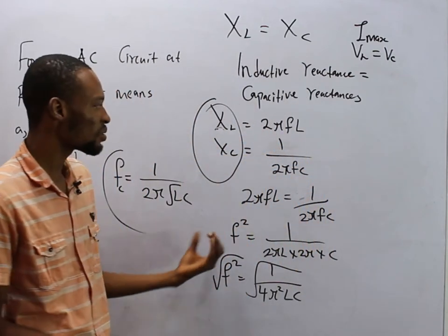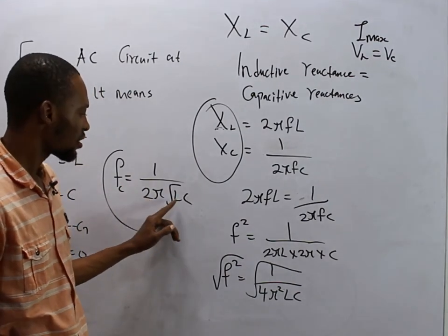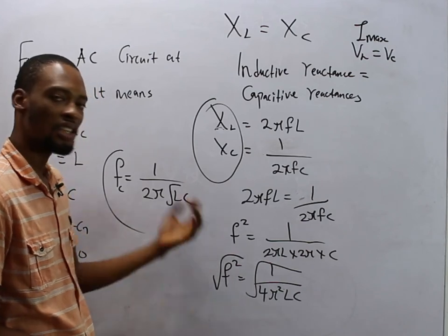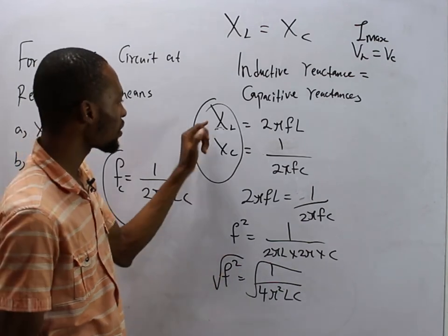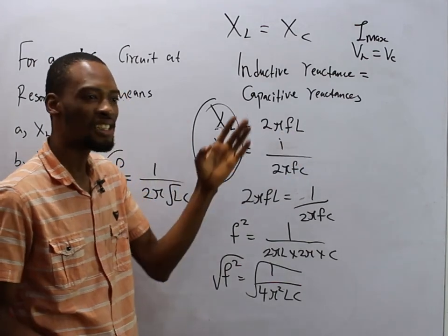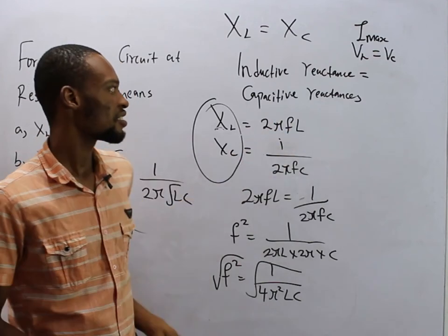If you are asked to look for resonance frequency, for example, 2π is constant, so once you are given the value of inductor and capacitor, you simply substitute and solve. If you are looking for inductive reactance, you substitute into this. Frequency is usually 50 hertz or 60 hertz.